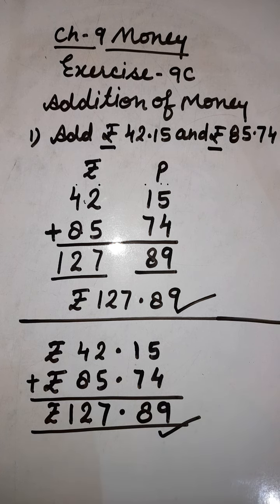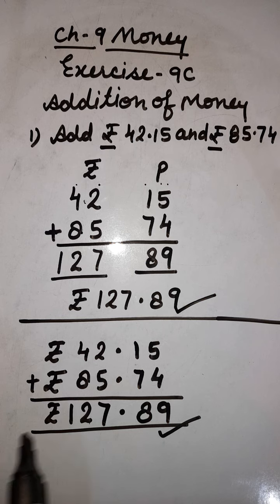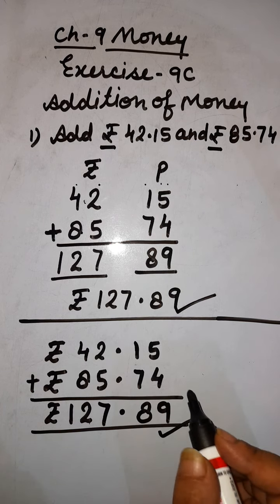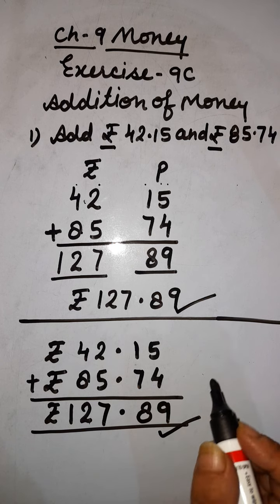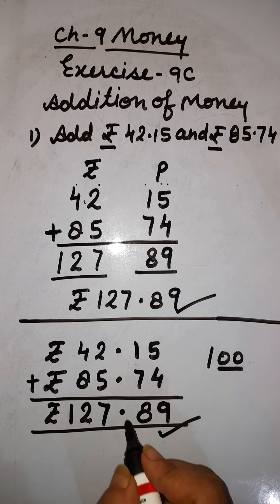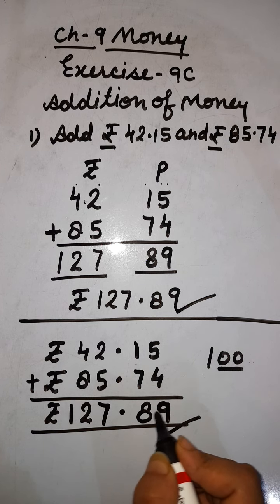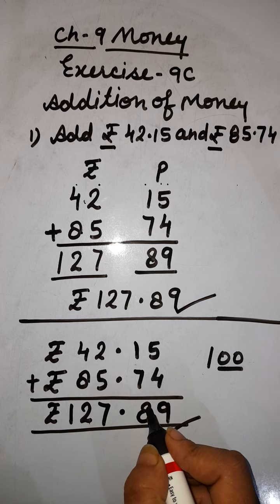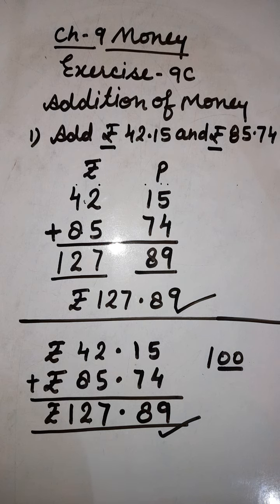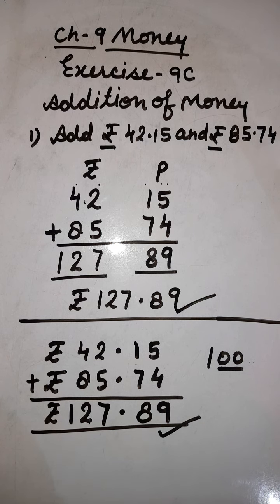Both methods are very easy. Remember: in paise, we have 2 digits — 100 paise equals 1 rupee, so we always put the decimal point before 2 digits. If the paise column gives us 3 digits, the extra 1 will convert into rupees.